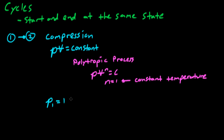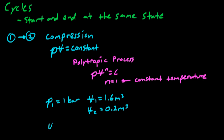We're told that the pressure at state 1 is 1 bar, the volume at state 1 is 1.6 meters cubed, and the volume at state 2 is 0.2 meters cubed. We're told that the change in internal energy from state 1 to state 2 is 0, which makes sense because this is a constant temperature process.